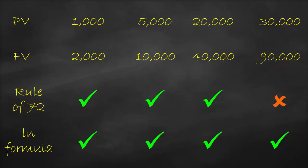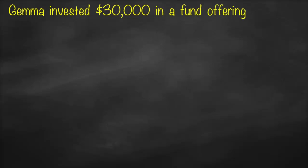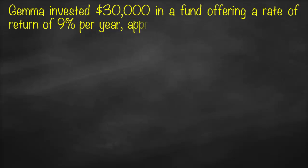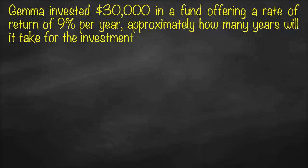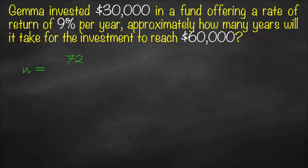Let's look at an example. Jama invested 30,000 in a fund offering a rate of return of 9% per year. Approximately how many years will it take for the investment to reach 60,000? Our present value is 30,000 and future value is 60,000. Since the future value is double the present value, we can use the Rule of 72.